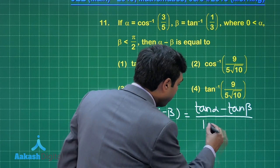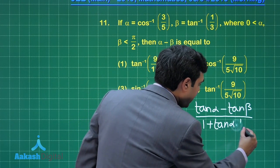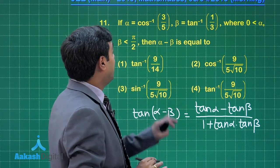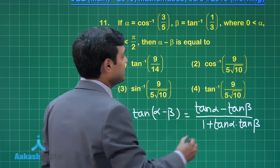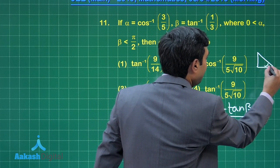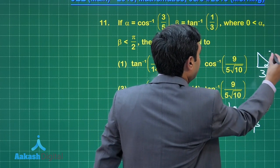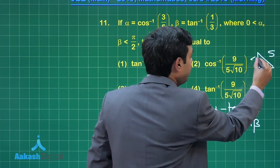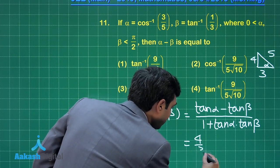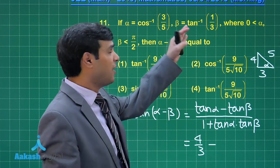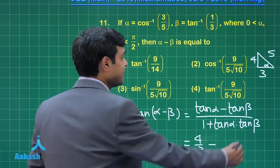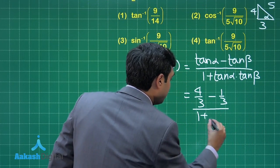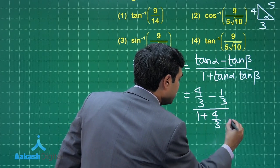tan(α − β) = (tan α − tan β) / (1 + tan α · tan β). Since α = cos⁻¹(3/5), we draw the triangle: adjacent = 3, hypotenuse = 5, opposite = 4, so tan α = 4/3. And tan β = 1/3.